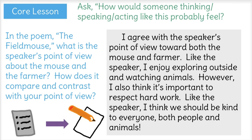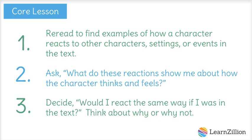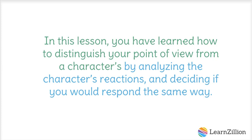Remember, in this lesson we followed three steps. First, we reread to find examples of how a character reacts to other characters, settings, or events in the text. Next, we asked, what do these reactions show me about how the character thinks and feels? And finally, we decided, would I react the same way if I was in the text? Think about why or why not. In this lesson, you have learned how to distinguish your point of view from a character's by analyzing the character's reactions and deciding if you would respond the same way.